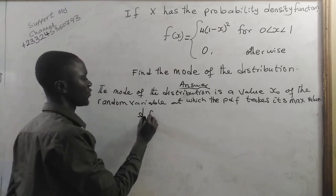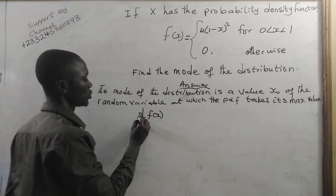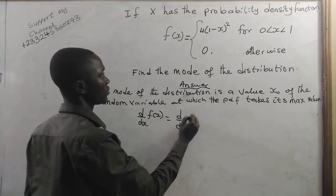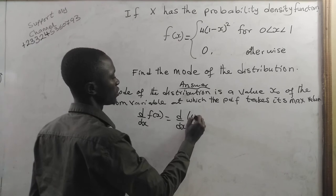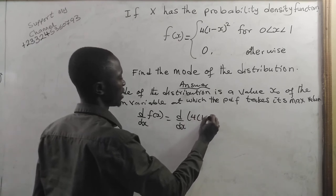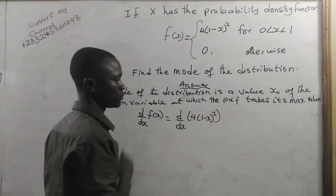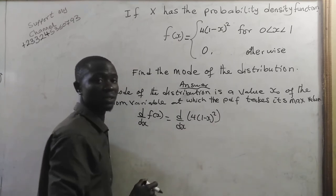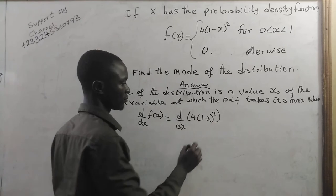The derivative of f(x) with respect to x is equal to the derivative of 4 times (1 minus x) squared with respect to x. Now, let us expand (1 minus x) squared.